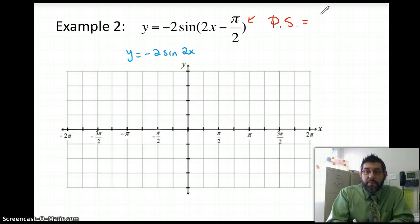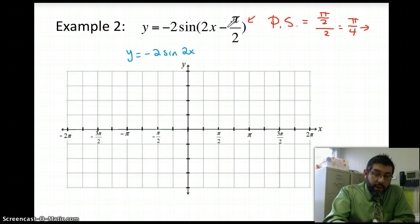Our phase shift is going to be pi over 2 divided by b, which is 2. So our phase shift here is going to be pi over 4. So after I graph this graph here, I'm going to move it pi over 4 units to the right. Okay, because this is negative. Alright, so let's go ahead and graph this one here, negative 2 sine 2x.